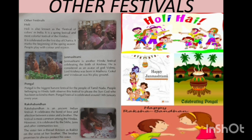Raksha Bandhan is an ancient Indian festival that celebrates the bond of love and affection between a sister and a brother. The festival is most common among the Hindus; however, it is also celebrated by Sikhs, Jains and other communities. The sister ties a thread known as Rakhi on the wrist of her brother, and the brother promises to always protect his sister.